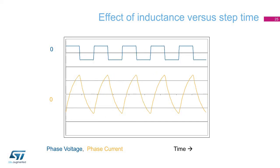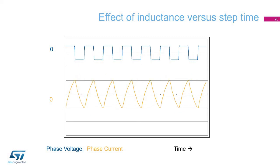Increasing the speed a bit more further reduces the peak current. When we reach this point, the motor has most likely already stalled if it has any load on it. Since the torque is proportional to the current in the motor, the torque will decrease as the peak current decreases. An earlier slide showed the speed-torque curve with a downward slope at increasing speed, and this reduction in peak current at higher speed is one of the contributing factors.